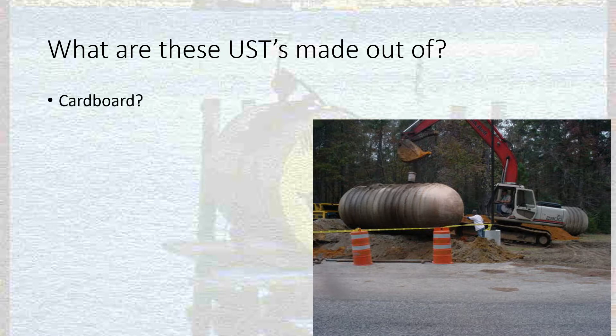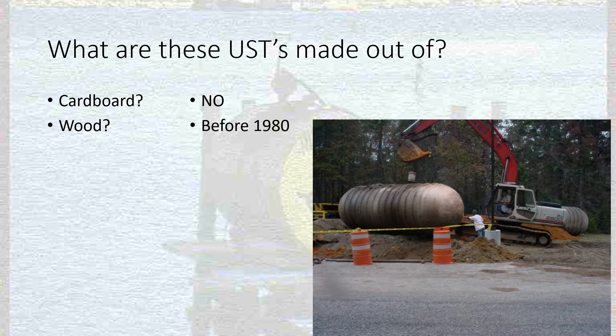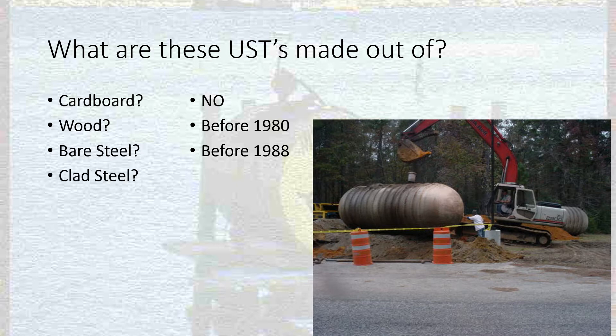What are these USTs made out of? Before the regulations came into existence, wood was a common material — they would basically make barrels and put them in the ground. The common theory was that oil came from the ground, so why would it be bad to let it go back in? Now we know how contamination from oil can harm water supplies and human health. Bare steel was commonplace up until the late 1980s. In 1988, the first real federal EPA UST regulations came out, and they stopped allowing bare steel because steel rusts underground.